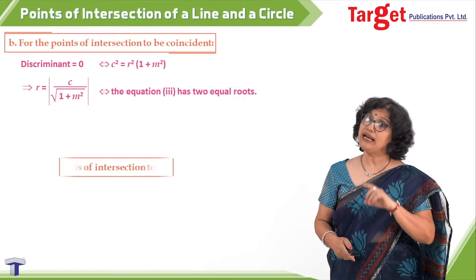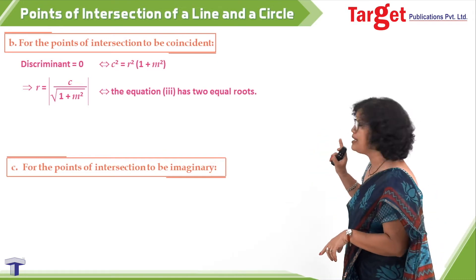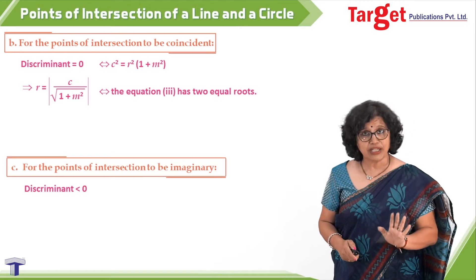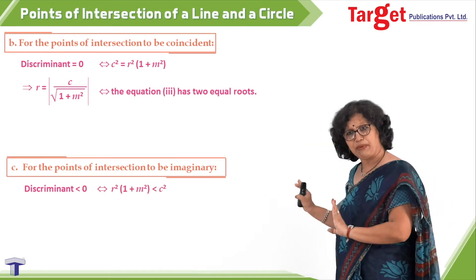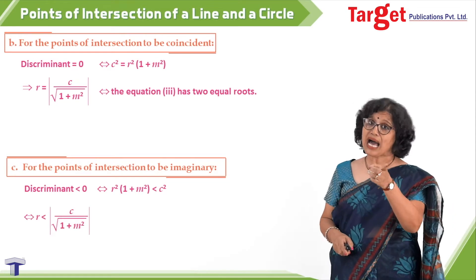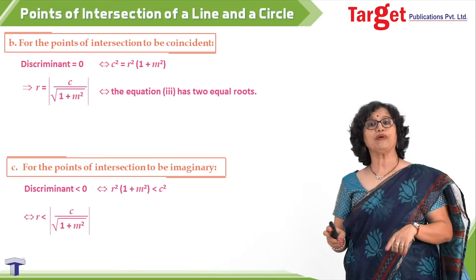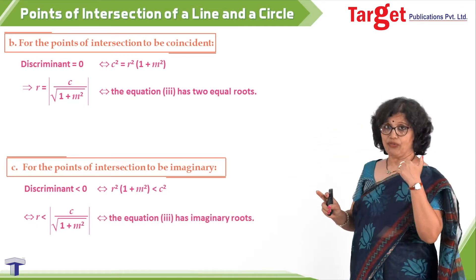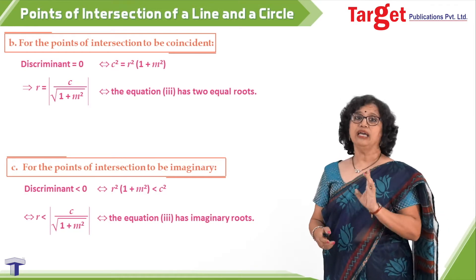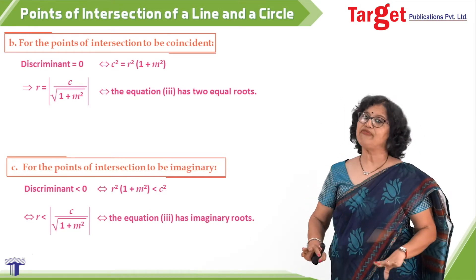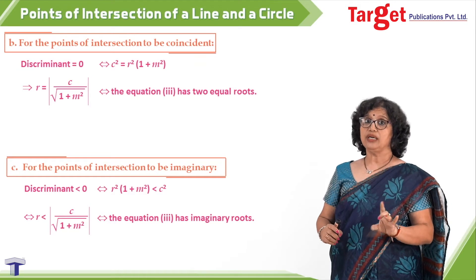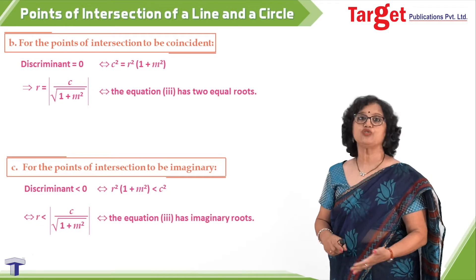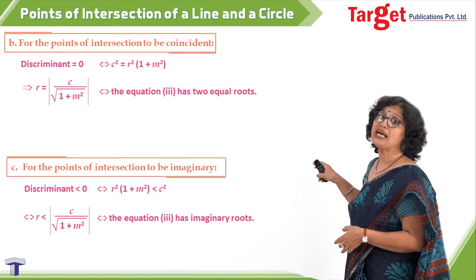The remaining case is when the points of intersection are imaginary. For imaginary points, the discriminant must be less than zero. Simplifying gives r less than the absolute value of c upon the square root of one plus m squared. This is equivalent to equation three having imaginary roots. So we have found conditions corresponding to all three cases.